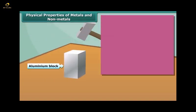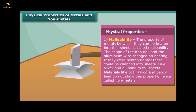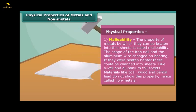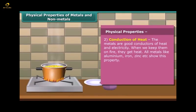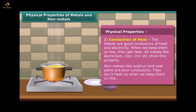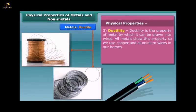Now let's know about physical properties. The first property of metal is malleability — by this property, metals can be beaten into thin sheets. Non-metals don't show this property. The next property is conduction of heat: metals are good conductors of heat and electricity, while non-metals are poor conductors. The property of metal by which it can be drawn into wires is called ductility — it is the third property of metals.